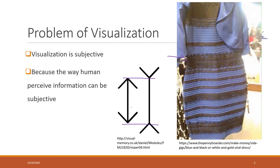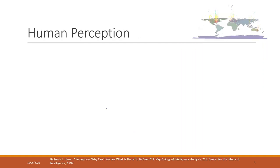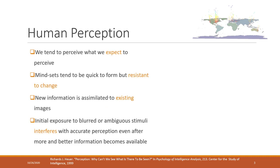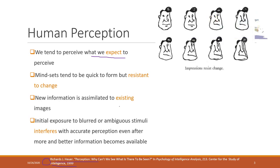When we talk about human perceptions, here are some features: We tend to perceive what we expect to perceive. Mind-sets tend to be quick to form but resistant to change. I'm not going to go into the details. I provide very great readings online from this paper, so if you have time, I recommend every student who wants to create maps should read those articles.